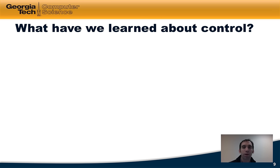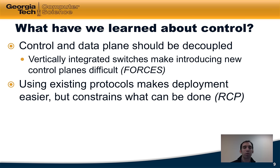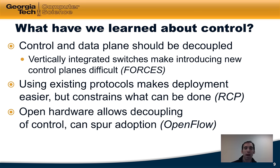What have we learned about network control in this lesson? One lesson is that control and data planes should definitely be decoupled, because vertically integrated switches make it very difficult to introduce new control planes. Forces looks a lot like OpenFlow, but because it required new standardization, adoption, and changes to the hardware, deployment ultimately became very difficult. The second lesson is that using existing protocols makes deployment easier, but it also constrains what can be done, as we saw with the RCP. Finally, open hardware can allow decoupling of control and can actually spur adoption — potentially one of the reasons that made OpenFlow so incredibly successful relative to these other similar proposals.